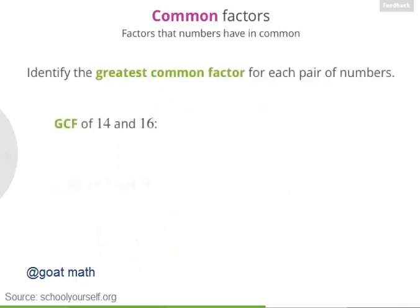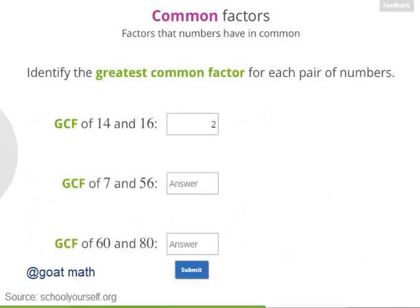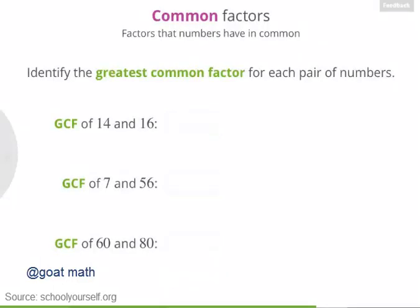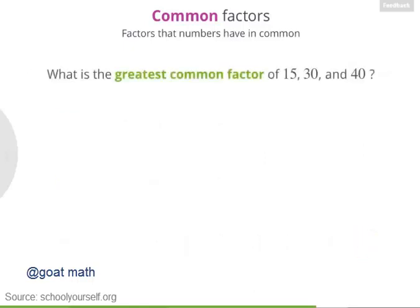Next, go ahead and identify the GCFs for each of these pairs of numbers. Precisely, so the common factors of 14 and 16 are 1 and 2, so the greatest common factor is 2. The common factors of 7 and 56 are 1 and 7, so their GCF is 7.